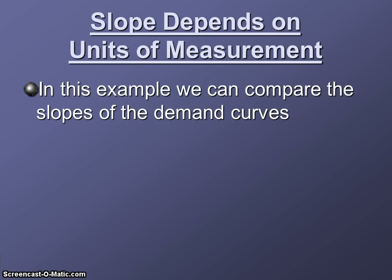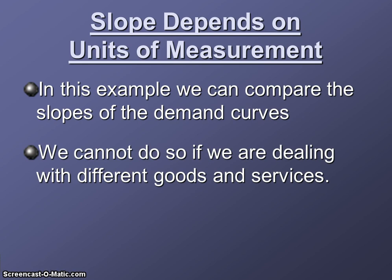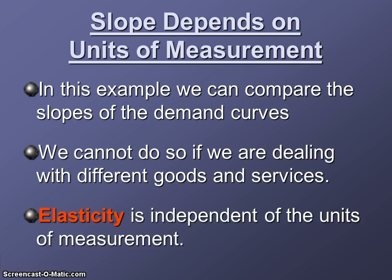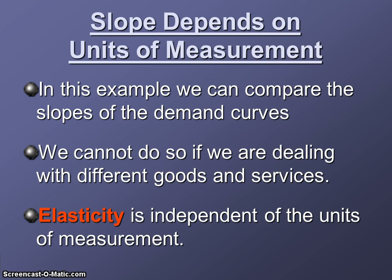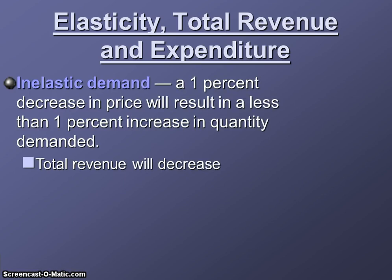Slope depends on units of measurement, so in this example we can compare the slopes of the demand curves because the units of measurement were constant between the two graphs. But that's not always true, especially if you're comparing two different goods and services and trying to figure out how the elasticities compare. Elasticity is important because it's independent of the units of measurement — it helps us look at percentage changes. The formula actually uses what we call the midpoint method. So: elasticity, total revenue, and expenditure — let's look at some different possibilities for elasticity.